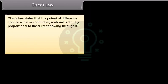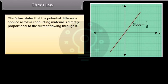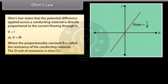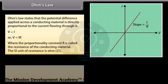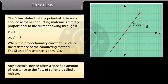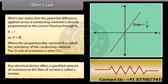Ohm's law states that the potential difference applied across a conducting material is directly proportional to the current flowing through it: V is directly proportional to I, or V equals IR, where the proportionality constant R is called the resistance of the conducting material. The SI unit of resistance is ohm. Any electrical device that offers a specified amount of resistance to the flow of current is called a resistor.